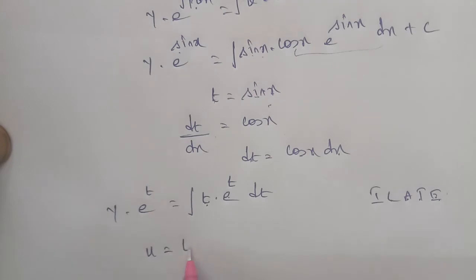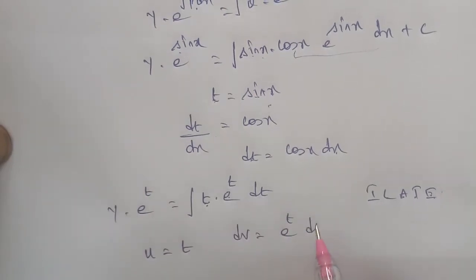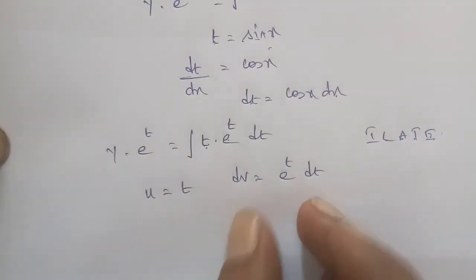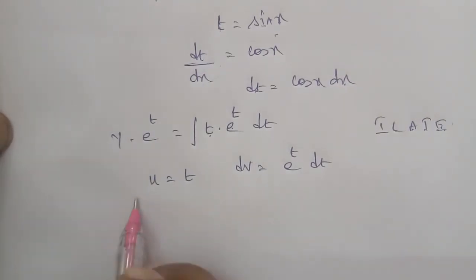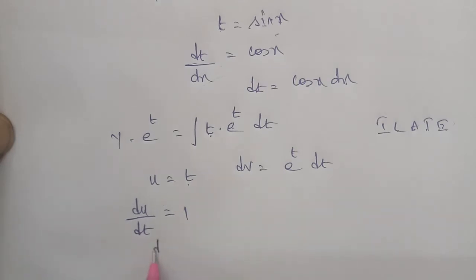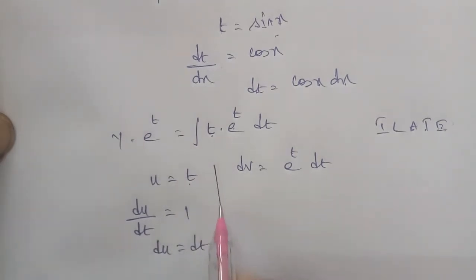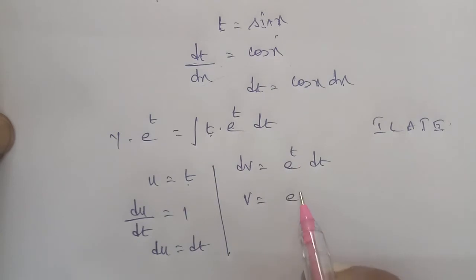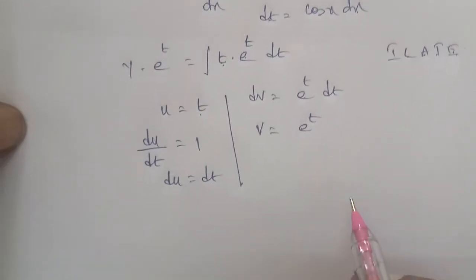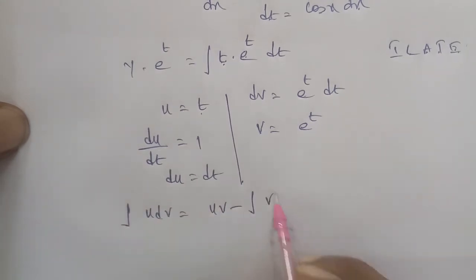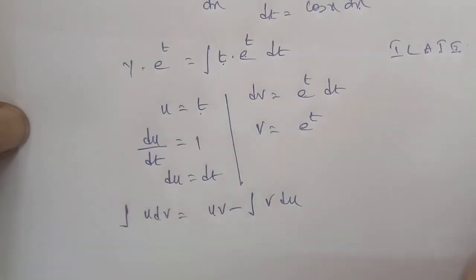So U is equal to t, and DV is equal to e power of t dt. Then du is equal to dt, and V is equal to e power of t (by direct integration formula). Using the formula: integral of u dv equals uv minus integral of v du.